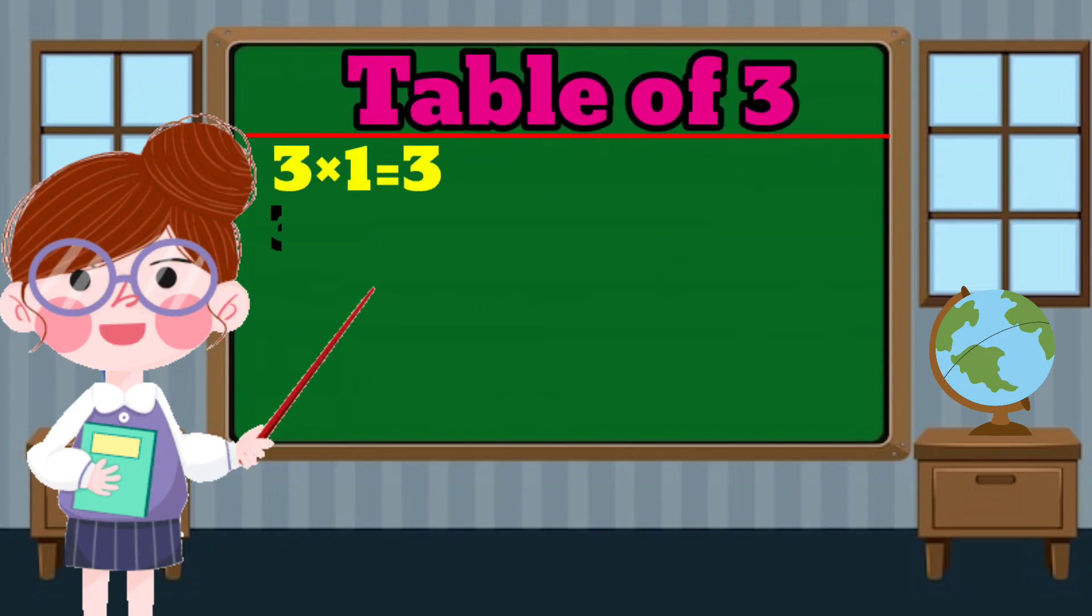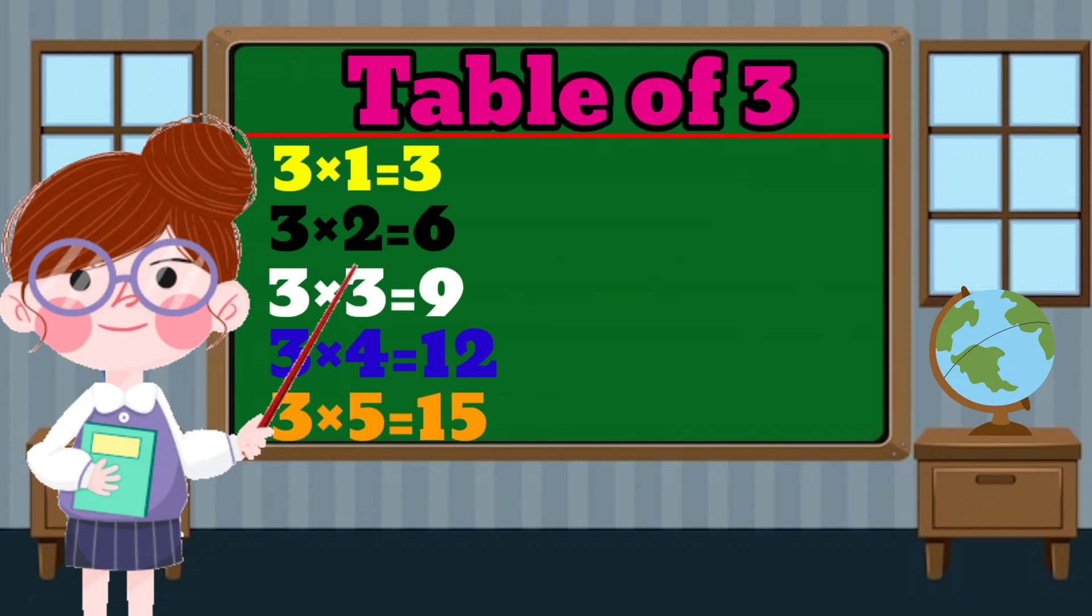3 times 1 equals 3. 3 times 2 equals 6. 3 times 3 equals 9. 3 times 4 equals 12. 3 times 5 equals 15.